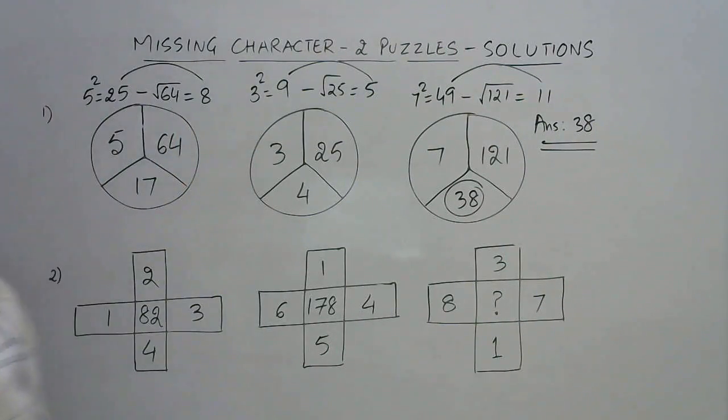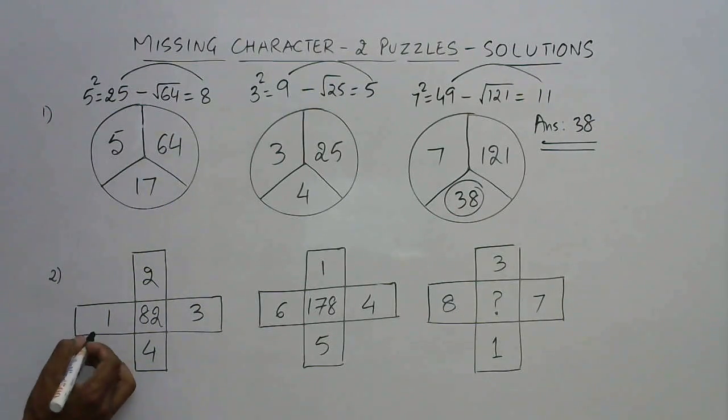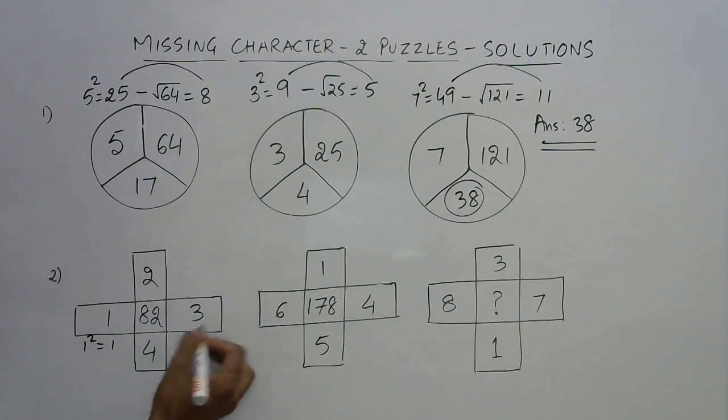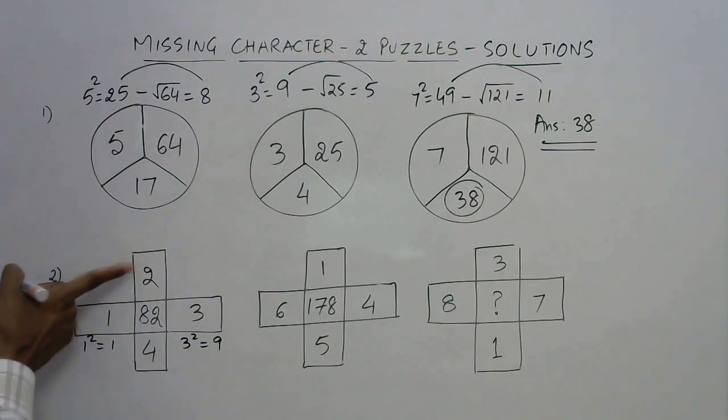So here is the explanatory solution of the second question. In this, just take the square of this number: 1 square is 1, square of this number opposite to this, 3 square is 9.